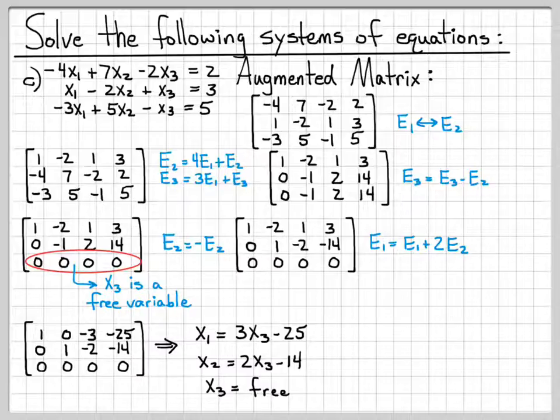Similarly, that second equation says that x2 is equal to 2x3 minus 14. And then the bottom full row of zeros means that x3 is a free variable. So this is actually the solution to this system of equations. x3 can be any number, and then once I've chosen some number for x3, I can compute x2 using this equation, and I can compute x1 using this equation.